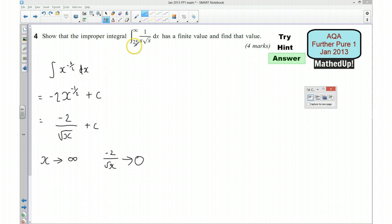We can also look at when x equals 25. If I put 25 into here, we can see that negative 2 over the root of x equals minus 2 fifths.